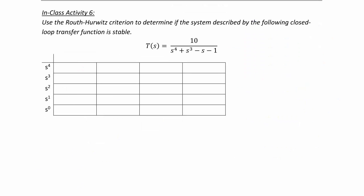In class activity 6, use the Routh-Hurwitz criterion to determine if the system described by the following closed loop transfer function is stable. T of s is equal to 10 over s to the 4th plus s cubed minus s minus 1. So notice that we are missing one term, so this can be written as 10 over s to the 4th plus s cubed plus 0 s squared minus s minus 1. So the first row is 1, 0, negative 1, and the second row is 1, negative 1.